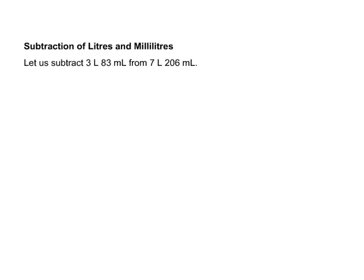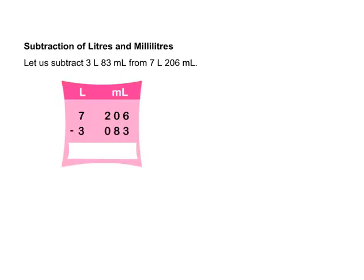Subtraction of liters and milliliters. Let us subtract 3 liters 83 milliliters from 7 liters 206 milliliters. Arrange the numbers in columns. Write 83 milliliters as 3 digits, that is 083. Subtract 083 ml from 206 ml and 3 liters from 7 liters. The difference is equal to 4 liters 123 milliliters.